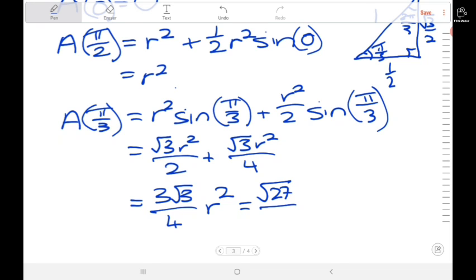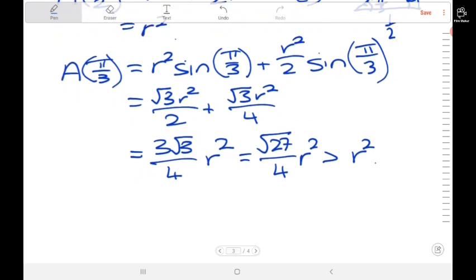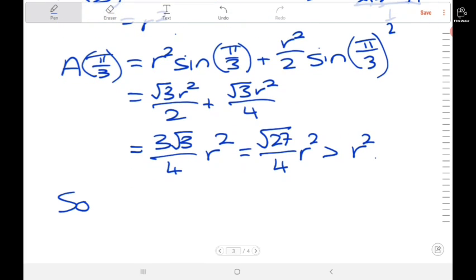This should have been over 4. So we'll get root 27 over 4 r squared. We don't need to know exactly as a decimal what this is, but it is greater than r squared.